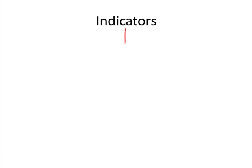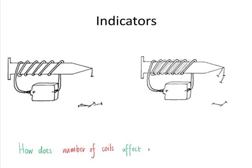Sometimes we can't measure the variable that we're actually interested in directly. We have to use an indicator to tell us about the variable. For example, we're really interested in the effect that the number of coils has on electromagnet strength, but we use something to tell us about electromagnet strength because we can't measure electromagnet strength itself.